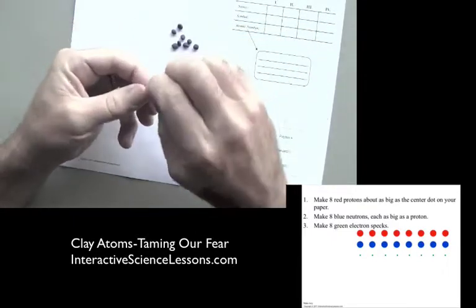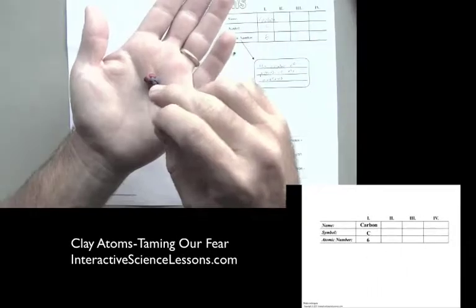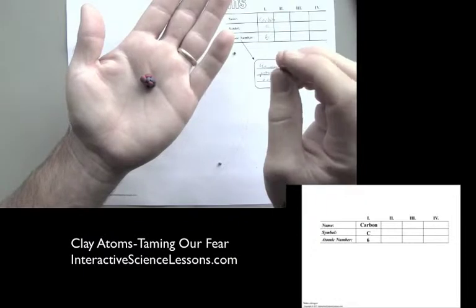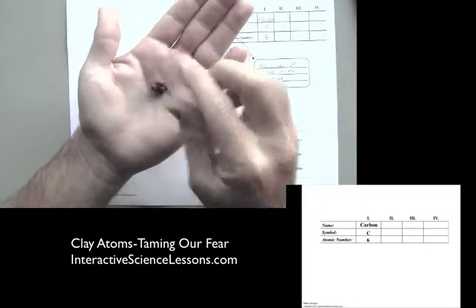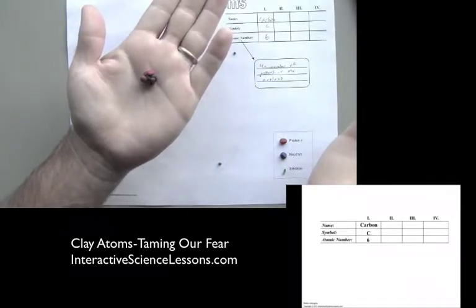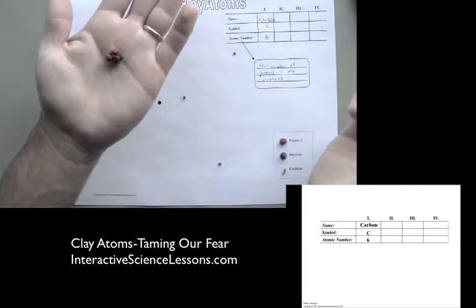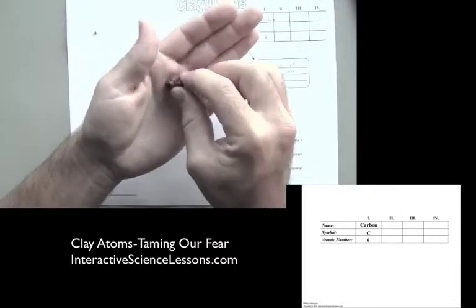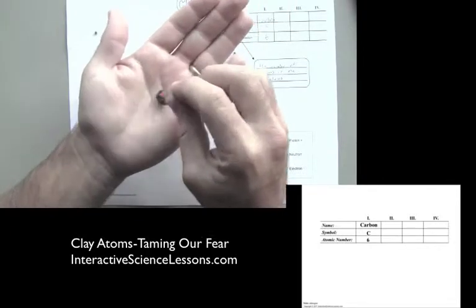Six protons—six little red dots—equal carbon. As soon as you stick this on here, that's going to equal something else. This is no longer carbon. What is this, guys? Yes, right, this is going to be nitrogen. So six protons is carbon, one more is nitrogen.